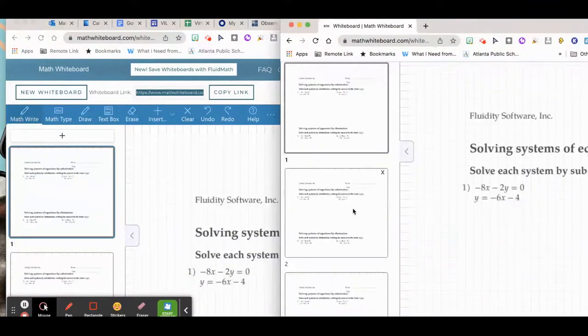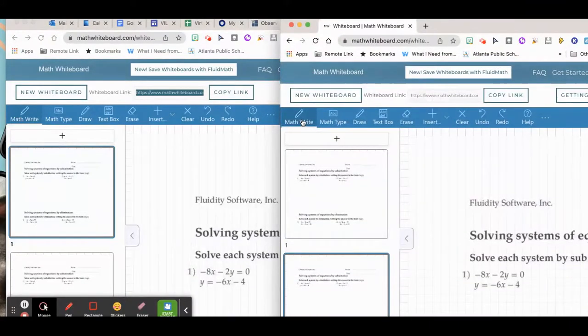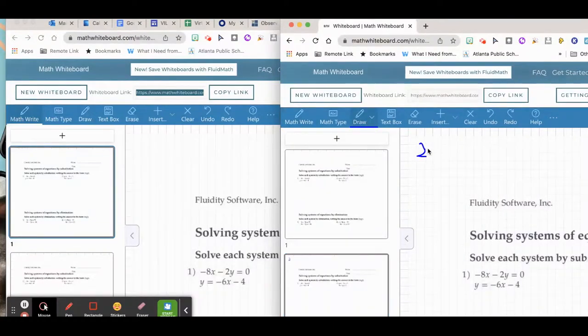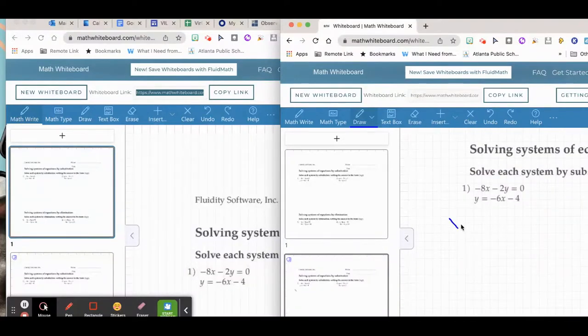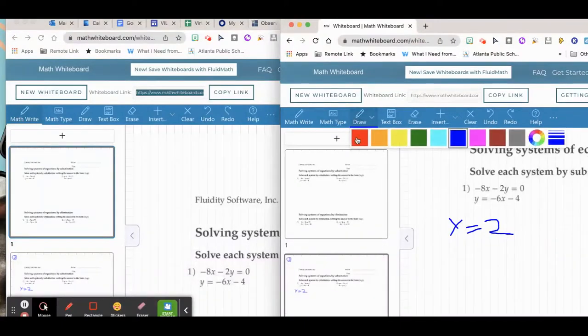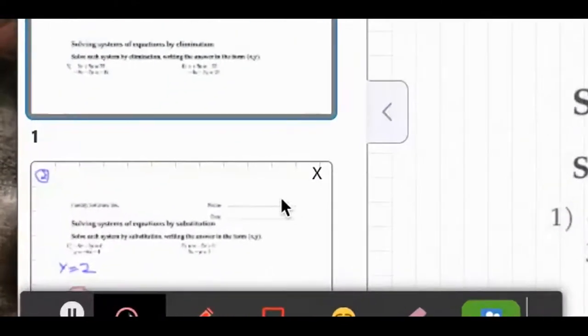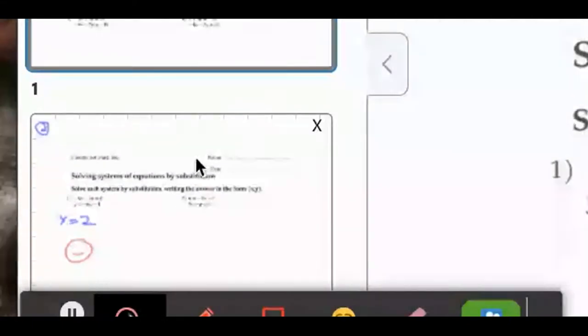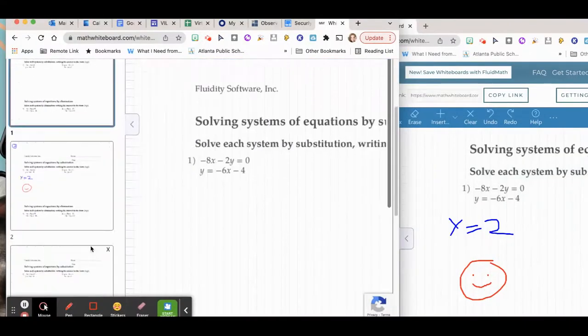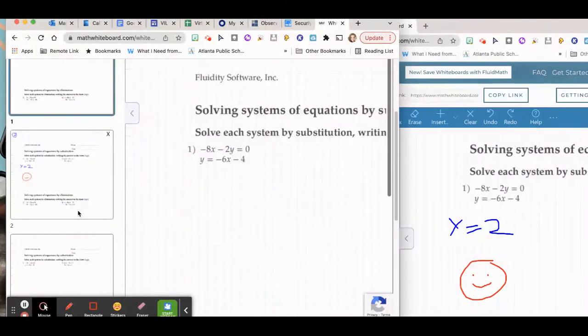So say that I assigned my groups and say that I have group two is working on this slide and I have one student who's working away. But then I have another student who is just goofing off and drawing smiley faces. I'm able to see that in real time on my whiteboards so I can monitor my student progress as they're working virtually or in a blended environment.